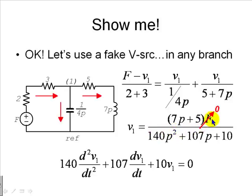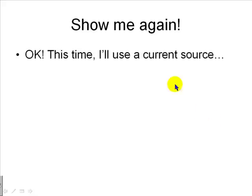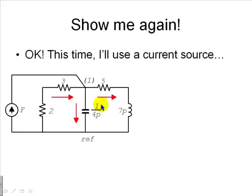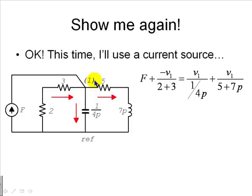But I said we could do that also with current sources. With the current source, the same circuit, but this time we have added a fake source between the reference node and node 1. As I said, I would write a KCL equation. Current is going in. F plus negative V1 over 2 plus 3 equals to the other two currents, which are the same as before.